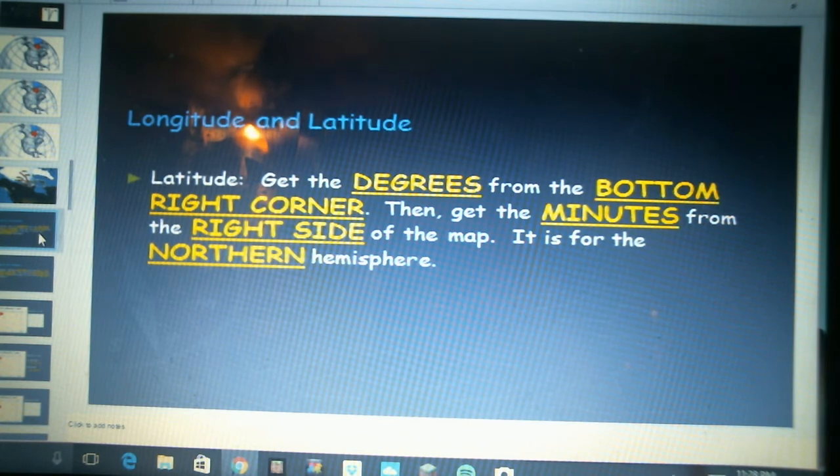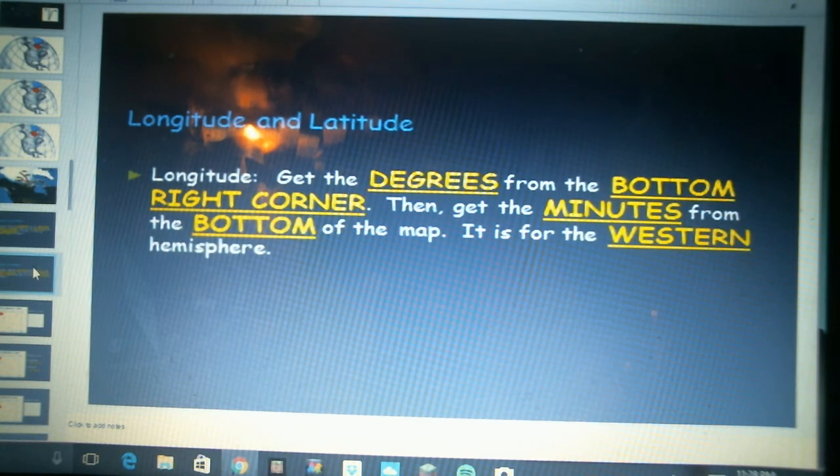And for the most part we're just going to be looking at the northern hemisphere for our topographical maps. For lines of longitude we get the degrees from the bottom right hand corner again and then minutes along the bottom of the map. And again we're just going to be looking at the western hemisphere.